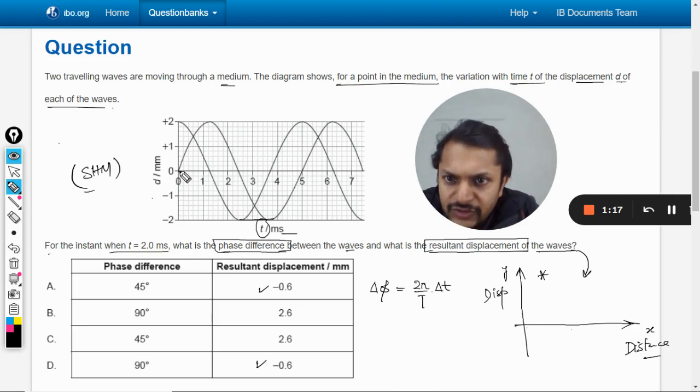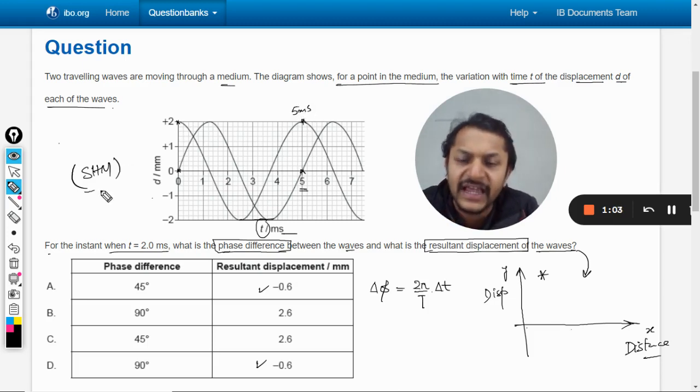We can just look at it. You see, for this wave, wave number one, it starts from here and is completed at five milliseconds. What about the second wave? It starts at this point and goes all the way up to this, and this is also completing its cycle at five milliseconds.